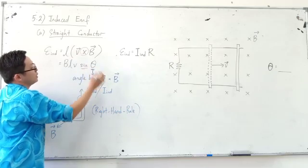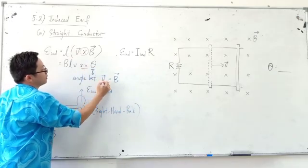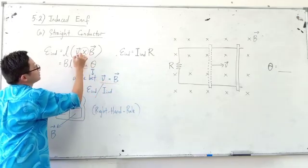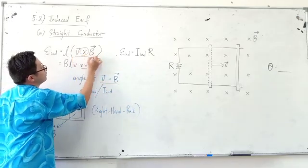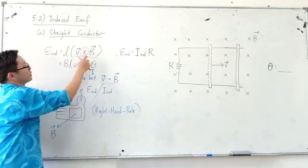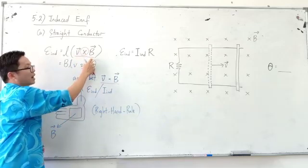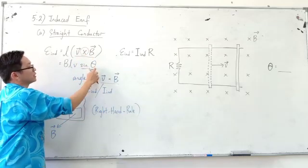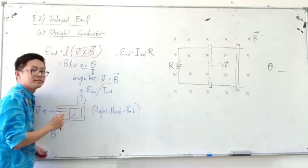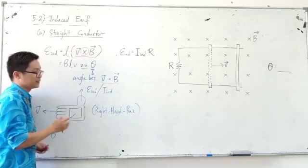Why is theta the angle between V and B? Because it is the cross product between V and B — V cross B. So theta is the angle between V and B. Understand? Yes.